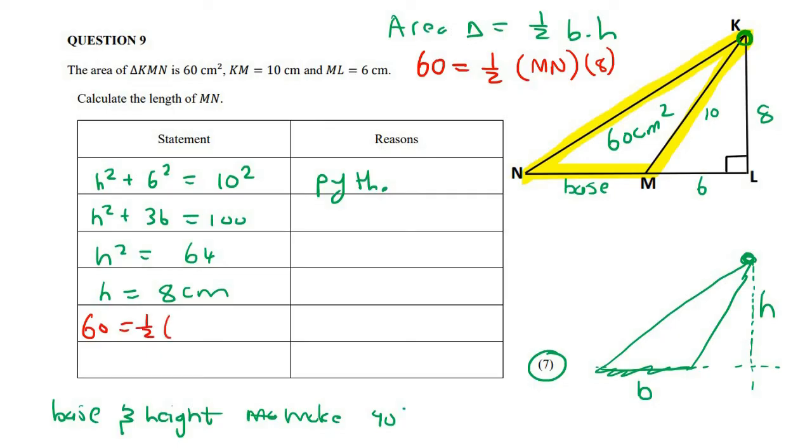60 is equal to a half MN times 8. There's no reason for that. They just told us that the area is 60. So what you could do now is you could say a half and 8. If you multiply a half and 8 together, you get 4. So I'm just going to say 4 MN. Now we're going to divide both sides by 4, and you end up with MN is going to be equal to 15 centimeters.